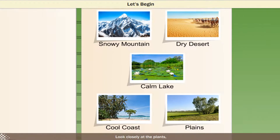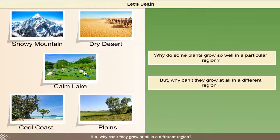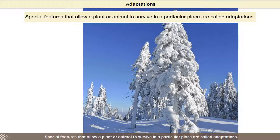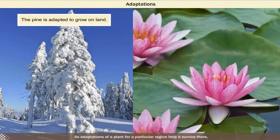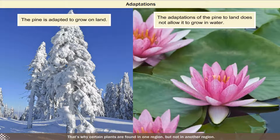Look closely at the plants. Plants of each region are different from plants of other regions. Why do some plants grow so well in a particular region, but can't grow at all in a different region? Special features that allow a plant or animal to survive in a particular place are called adaptations. Adaptations help a plant survive in one region, but make it equally difficult to survive in a different place. That's why certain plants are found in one region but not in another.